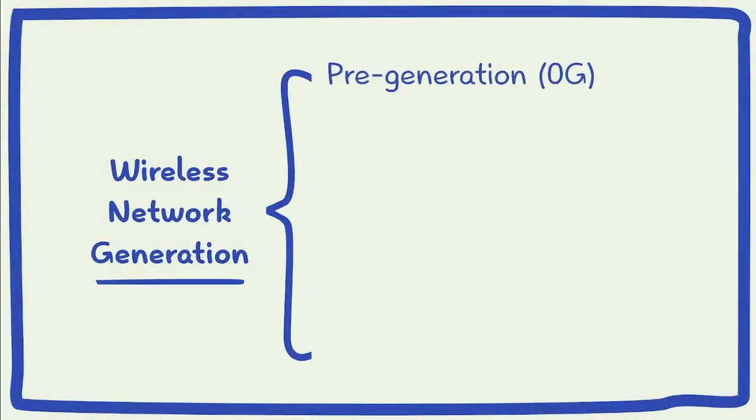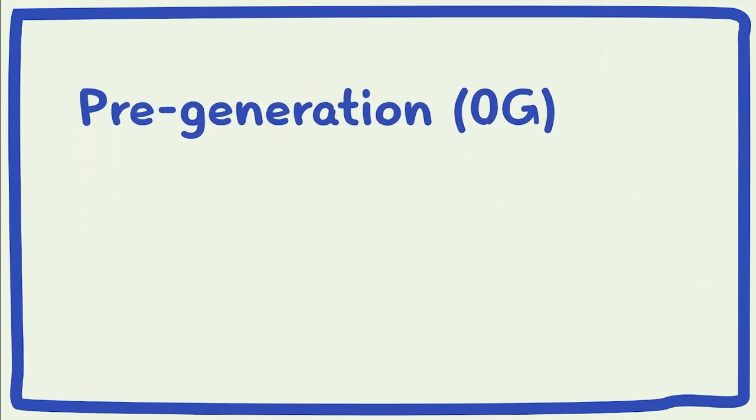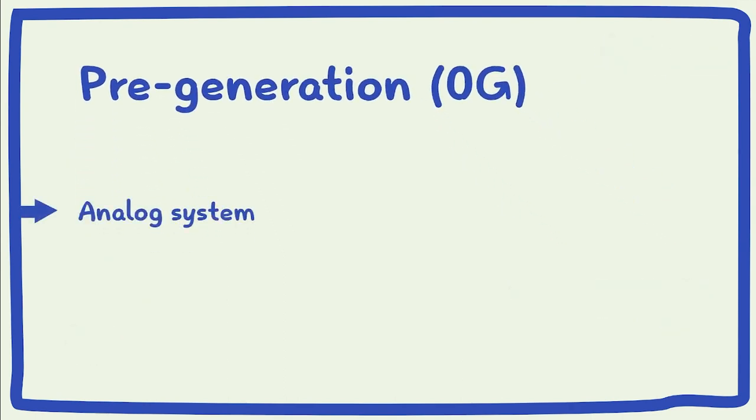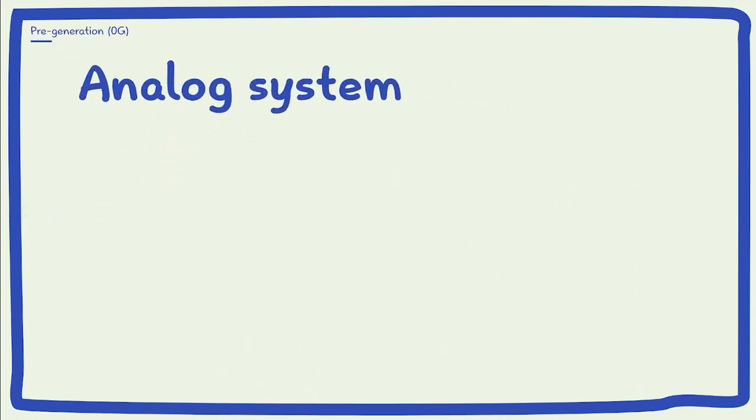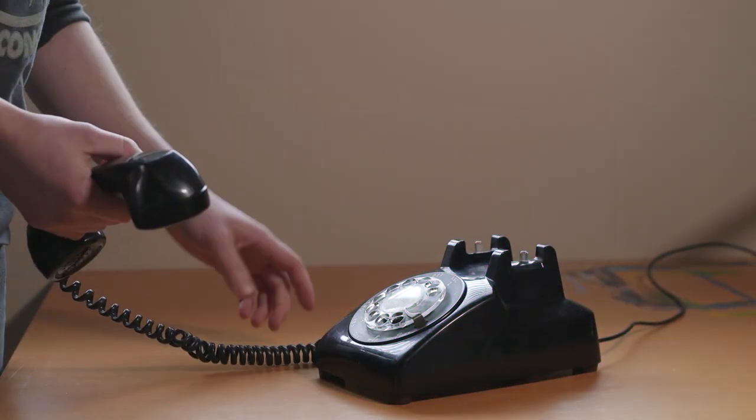The Mobile Radio Telephone System, also known as Zero Generation, was the first generation of mobile communication technology. Preceding the cellular system, it was an analog system that used analog signals as carriers and provided half-duplex communication.